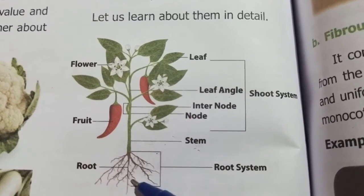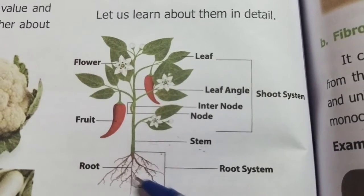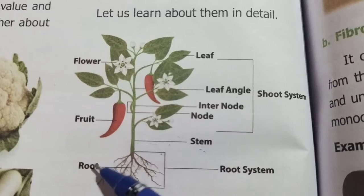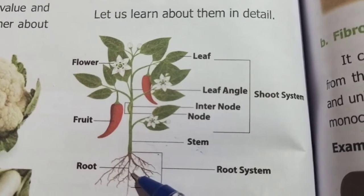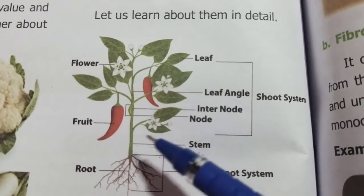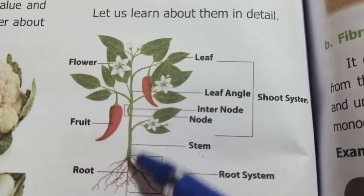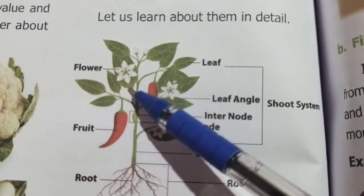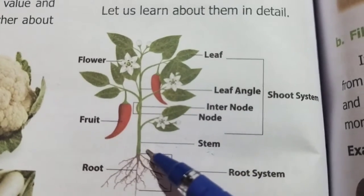The first one is root. The root is a very important part of a plant. It is found below the soil. Usually, it is brown in color. It fixes the plants into the soil. The next one is stem. The stem is found above the soil. The stem supports leaf, flower, fruit, and branches in the plant.